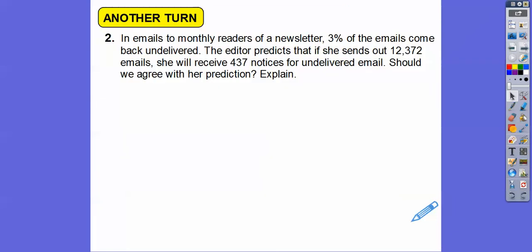In emails to monthly readers of newspapers, 3% of emails come back undelivered. So the editor predicts that if she sends out 12,372 emails, she will receive 437 notices for undelivered email, should we agree with her prediction. All right. So what we've got to do is find 3% of 12,372 and see if it's close to 437.